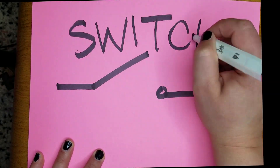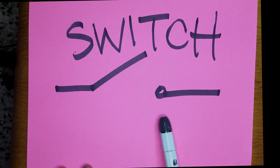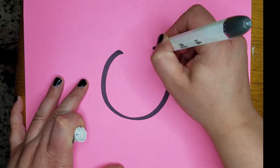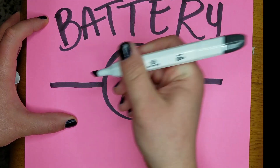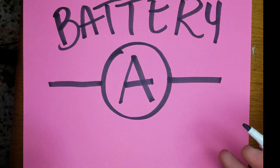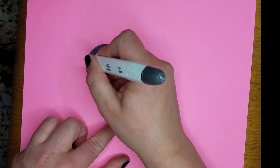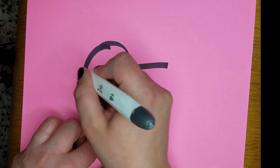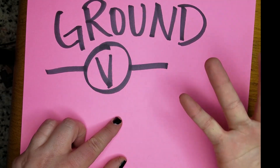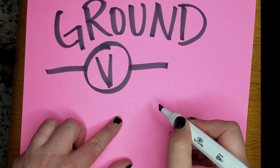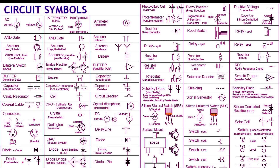This is the symbol for a switch — it looks like a switch. This is the symbol for a battery; it sort of looks like a battery standing on end from an aerial view. And of course any circuit would not be complete without a ground. That's the original ground connect symbol, but this more popular one on the right is more commonly used.